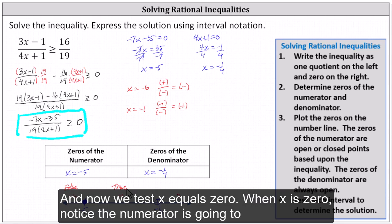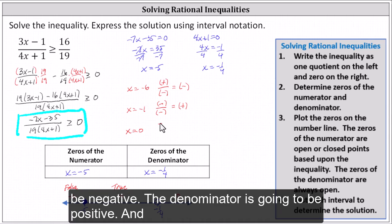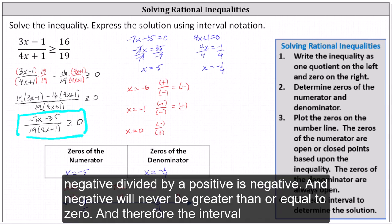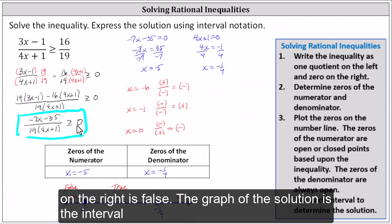Testing x = 0: the numerator is going to be negative. The denominator is going to be positive. A negative divided by a positive is negative. A negative will never be greater than or equal to zero, and therefore the interval on the right is false.